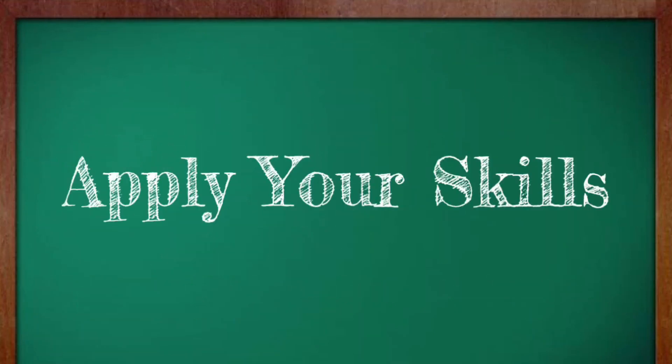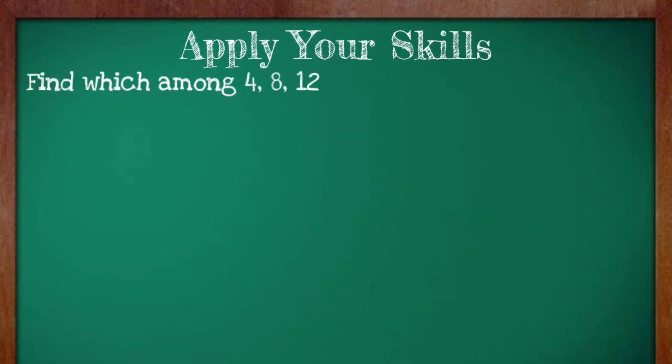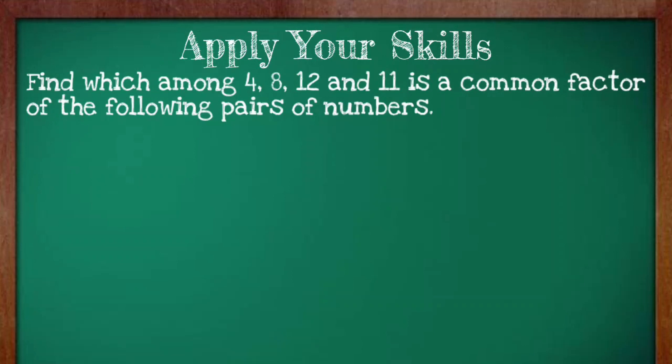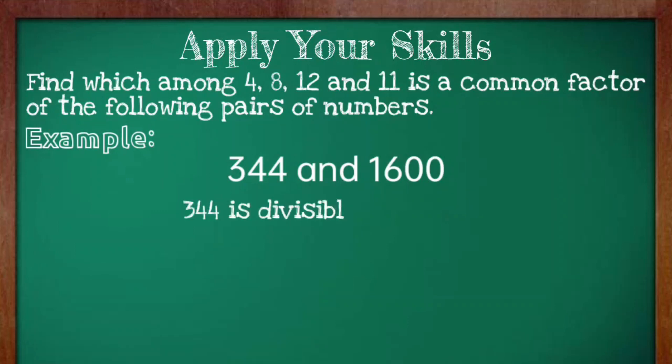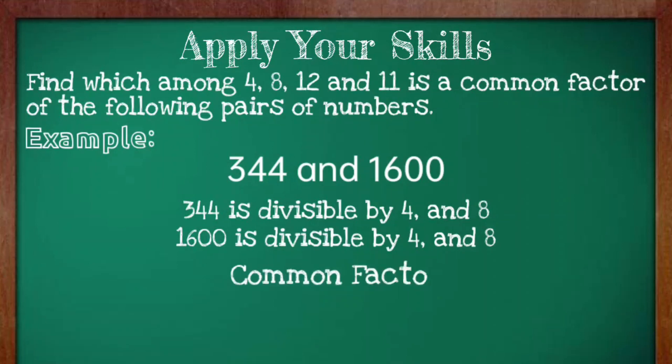Apply your skills. Find which among 4, 8, 12, and 11 is a common factor of the following pairs of numbers. Example: 344 and 1,600. 344 is divisible by 4 and 8. 1,600 is divisible by 4 and 8. Common factors are 4 and 8.